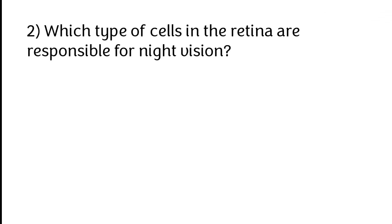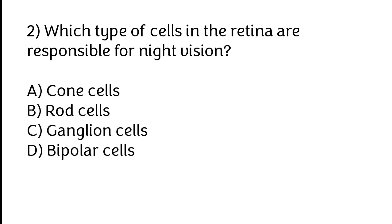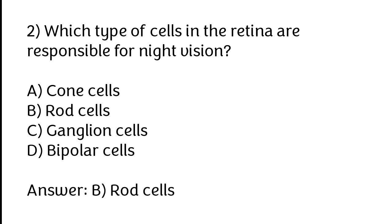Which type of cells in the retina are responsible for night vision? Options: A) Cone cells, B) Rod cells, C) Ganglion cells, D) Bipolar cells. The correct answer is option B, rod cells.